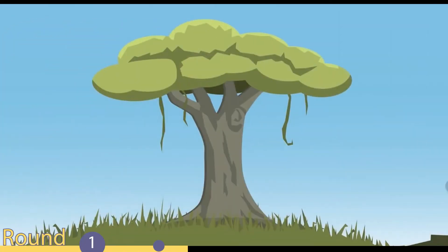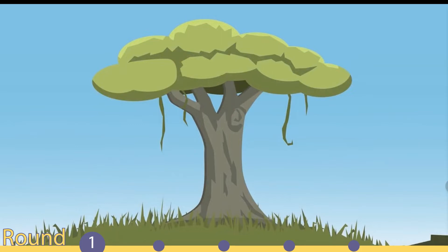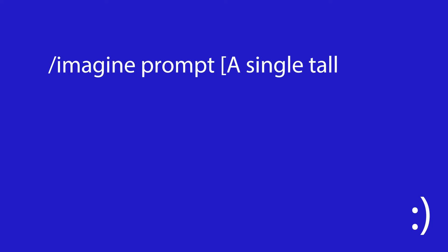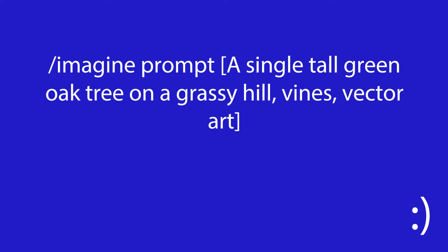Here we have a drawing I did in Adobe Illustrator — a pretty simple, straightforward vector tree. This is one of the areas where AI art excels: doing simple, basic things that there are millions of references for. This AI generator basically scours the internet for images and puts together something like what it has in its database. So to start off, I went to MidJourney and typed 'a single tall green oak tree on a grassy hill, vines, vector art' — essentially a description of what we're seeing.